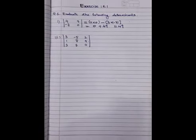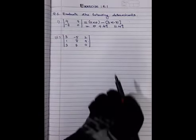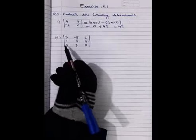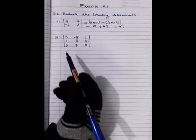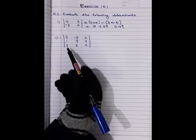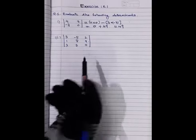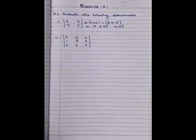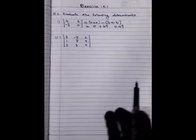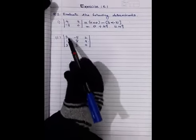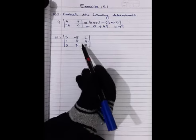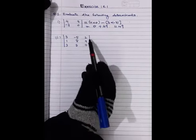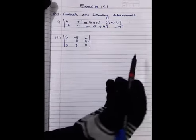Next, question number 2. In question number 2, we are given a 3×3 determinant with elements 3, -5, 2 in the first row; 1, 8, 9 in the second row; and 3, 7, 0 in the third row.